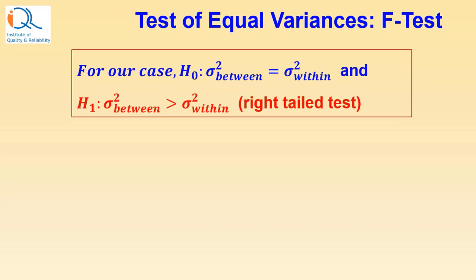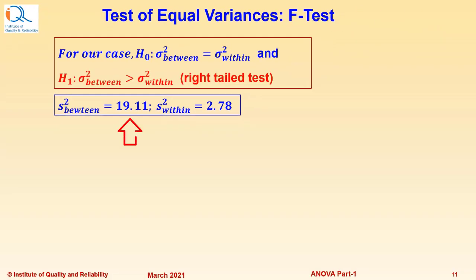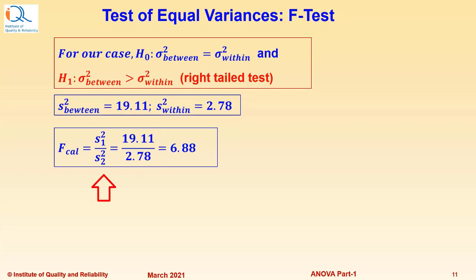For our case, the null hypothesis is sigma-squared-between equals sigma-squared-within, and the alternate hypothesis H1 is sigma-squared-between greater than sigma-squared-within — a right-tailed test. S-squared-between equals 19.11 and S-squared-within equals 2.78. The F-calculated equals the ratio of the two variances: 19.11 divided by 2.78, which is 6.88.